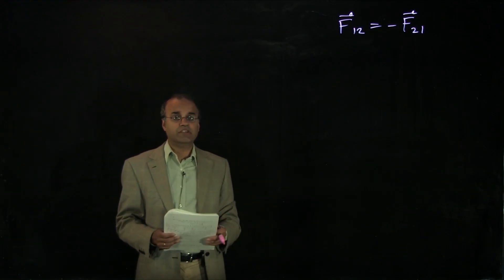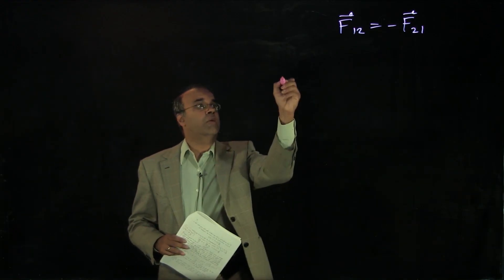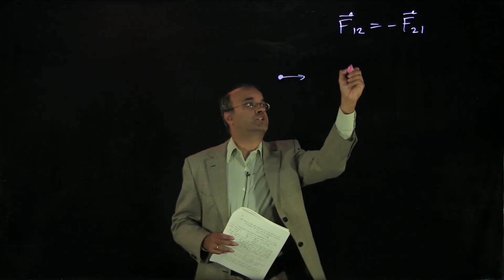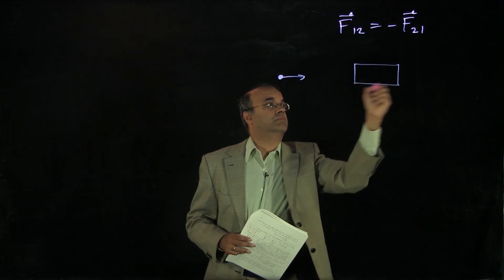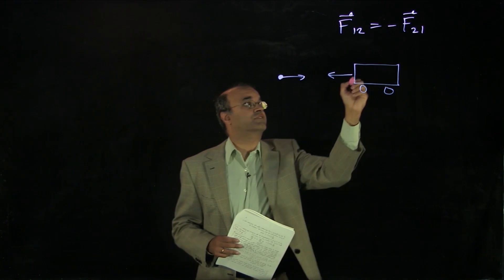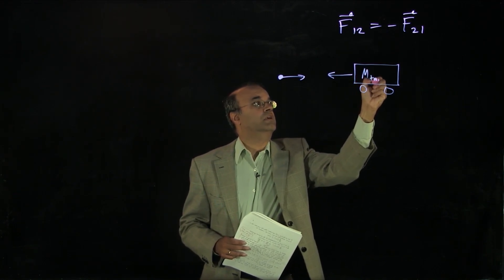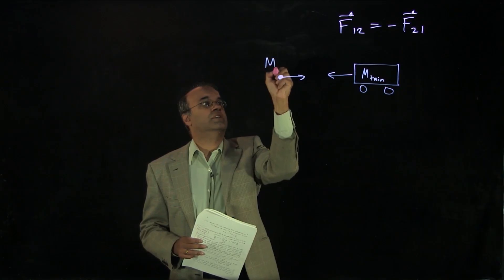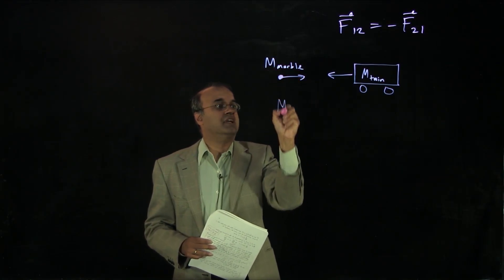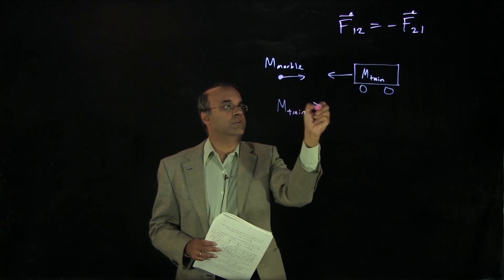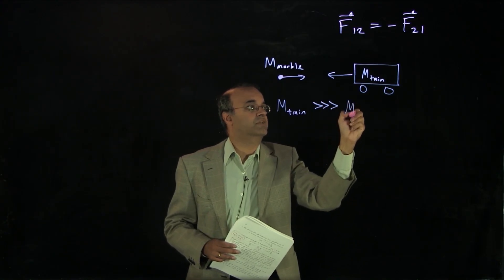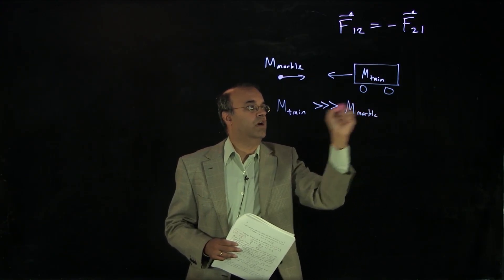I'm going to pick a very extreme example. Let's imagine the collision between a marble, moving this way, and a train, moving that way. The mass of the train, m sub train, and the mass of the marble is m sub marble, and obviously the mass of the train is much, much larger than the mass of the marble.